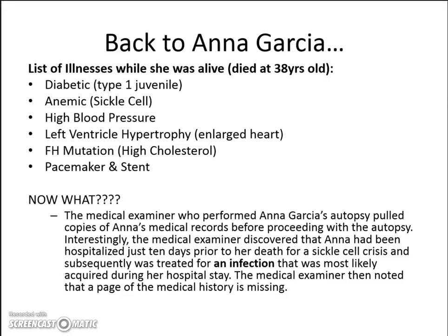We've been talking about all of Anna's symptoms and conditions. When she was alive, she had quite a few things going wrong with her. She died pretty young at the age of 38. Some of the things she had were type 1 diabetes diagnosed when she was a juvenile, sickle cell anemia, high blood pressure, her heart was enlarged, and she had a family history of high cholesterol because of that FH mutation. We just learned that she had a pacemaker and a stent in her coronary artery as well.